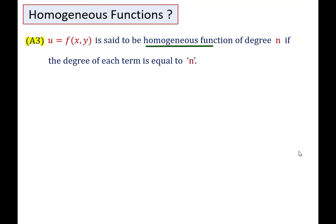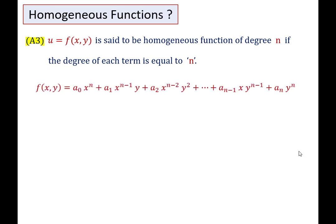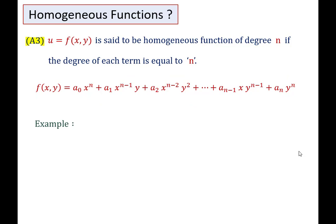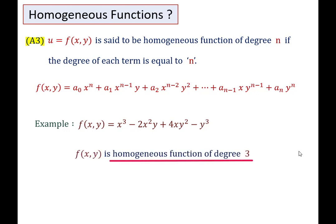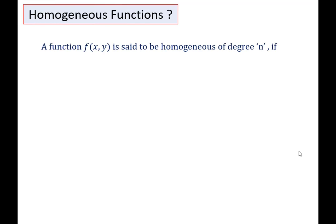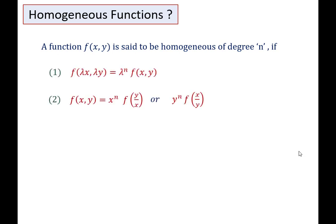Now we will discuss the third approach. A function U is said to be a homogeneous function of degree n if the degree of each term is equal to n. Suppose the function F(X, Y) is in polynomial form; it is a homogeneous function in X and Y of degree n because the degree of each term is n. For example, a polynomial function where every term has degree 3 is a homogeneous function of degree 3. Note that this definition of homogeneity is applicable only for polynomial functions.